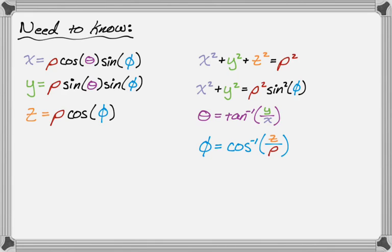We also need to know how to find rho, theta, and phi. So x squared plus y squared plus z squared is equal to rho squared. It turns out that x squared plus y squared is also equal to rho squared sine squared of phi, which is very useful to know in a lot of problems. It's actually going to be useful in this one.